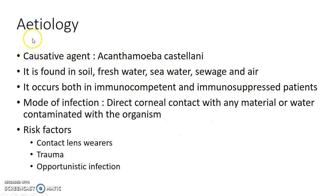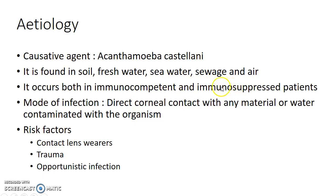Now let us see about the etiology of Acanthamoeba keratitis. The causative agent of this disease is Acanthamoeba castellani. This organism is found in soil, freshwater, seawater, sewage, and air. Acanthamoeba keratitis can occur both in immunocompetent and immunosuppressed patients. The mode of infection is direct corneal contact with any material or water contaminated with the organism.